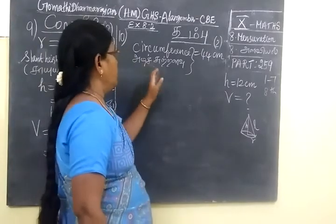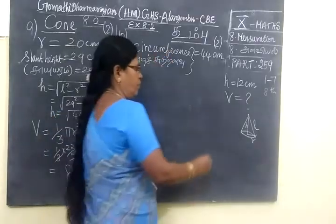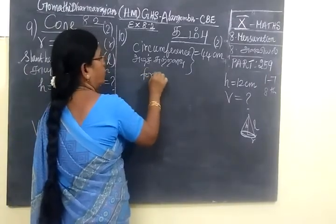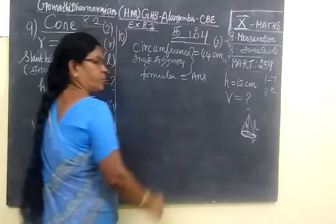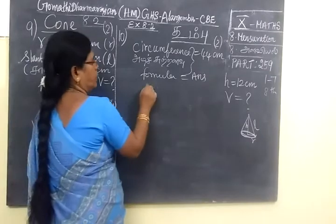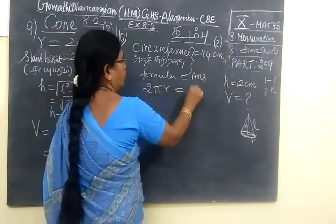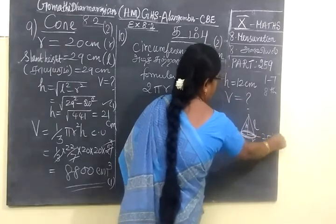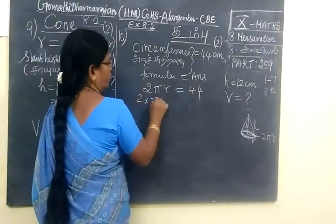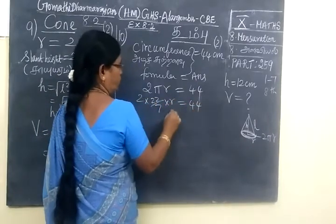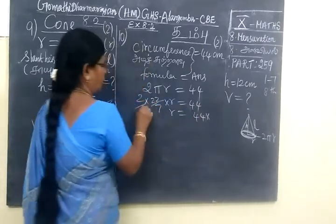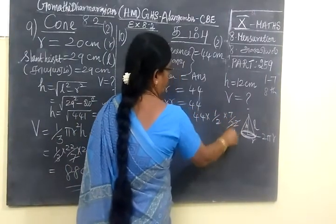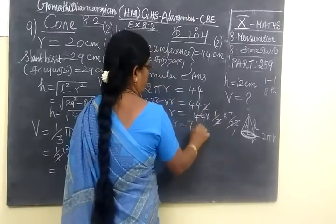And in the 10th question, it is given circumference. In the circumference when you put them, this answer is 44. If the answer is given, we can write formula equal to answer. Then circumference 2πr. Every time I am stressing it, 2 times, 2 times. So R equals to 7.